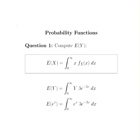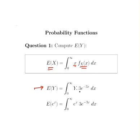First, let's compute the expected value of y. This is a general definition of how to compute the expected value: it's x times the PDF of the variable, and we integrate that. So here, we are looking for the expected value of y, which is y times the probability density function, 3 times e to the minus 3x dx.